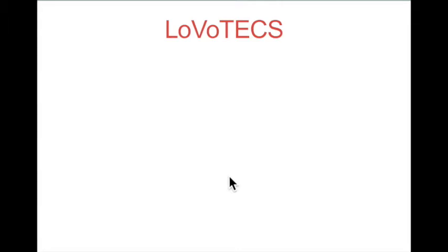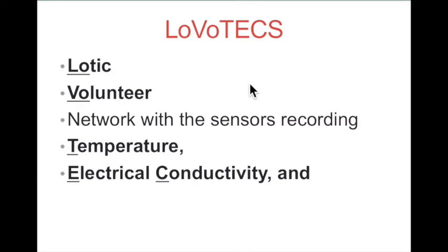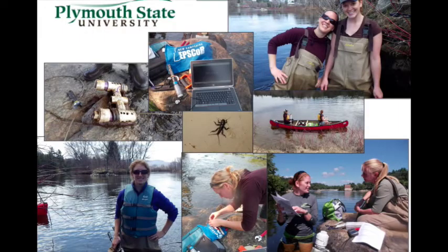Another example is a data set that you will probably use for this curriculum. LOBOTEX stands for LOTIC volunteer network, with sensors recording temperature, electrical conductivity, and stage. Stage is just a science word for water depth, but electrical conductivity is a little more complicated. Cindy Carlson from New England College will be explaining electrical conductivity in an upcoming video lecture. The goal of LOBOTEX is to improve our understanding of New Hampshire's water resources.